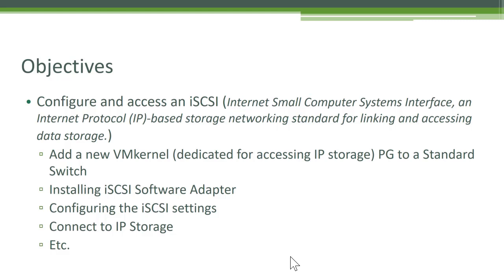We will see how to create a new VMkernel, and with that new VMkernel we will access our IP storage. We'll explore how to install the iSCSI software adapter on your ESXi, then configure the newly installed iSCSI software adapter, and connect it to our IP storage so we can start seeing the LUNs or data volumes available on our iSCSI storage. Let's jump into the hands-on.